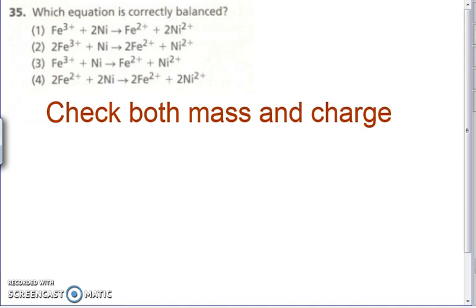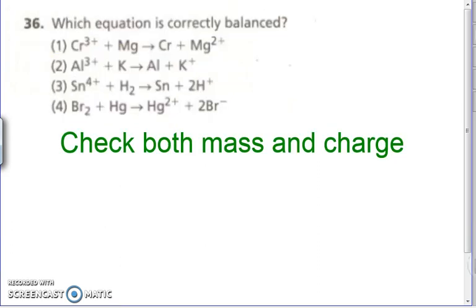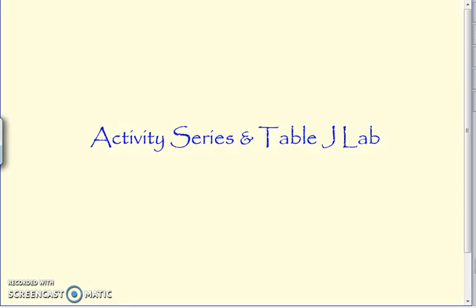Number 35 — which equation is correctly balanced? This is asking whether both mass and charge are conserved on both sides — checking for mass and charge. That one's correct; the others are incorrect. Number 36 — which equation is correctly balanced again? You're checking both mass and charge. So now we're going to do the activity series, table J lab, and I'll go prep that separately.